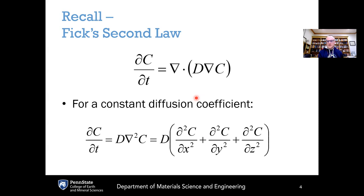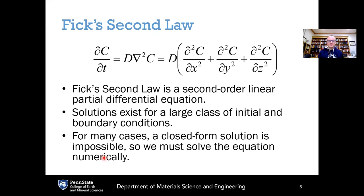Recall from last time in chapter three that Fick's second law can be written in its most general form, where the time derivative of concentration equals the divergence of the product of the diffusion coefficient and the gradient of concentration. With constant diffusion coefficient D, the D can be brought out in front, and the divergence of the gradient operator is simply the Laplacian operator. In three-dimensional Cartesian space, this is the sum of the second spatial derivatives of concentration with respect to x, y, and z, multiplied by D, equal to the time derivative of concentration.